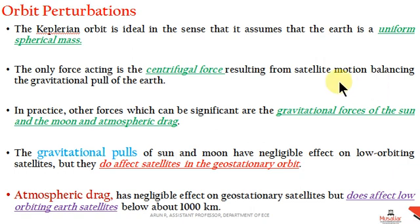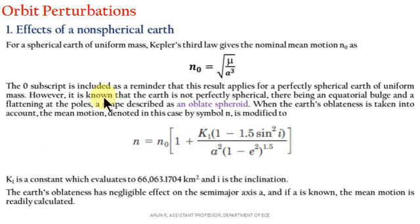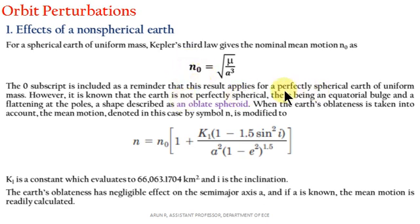Orbital perturbations also arise due to Earth's non-spherical shape. Earth is not a perfect sphere; this can result in orbital perturbations. According to Kepler's law, Earth is considered a uniform spherical mass, and from Kepler's law we can derive the equation for mean motion n, here designated as n₀, assuming a perfectly spherical Earth of uniform mass.